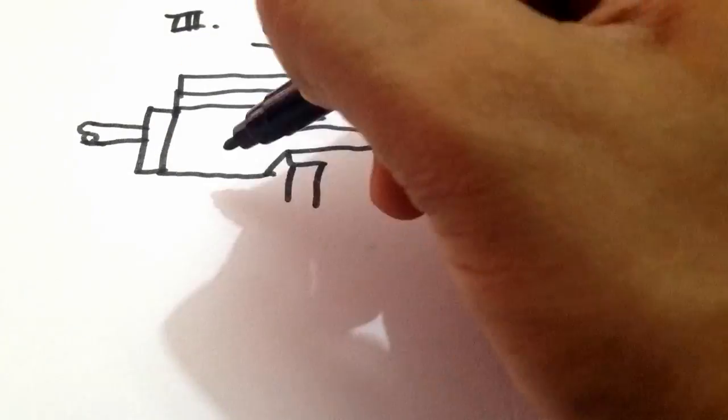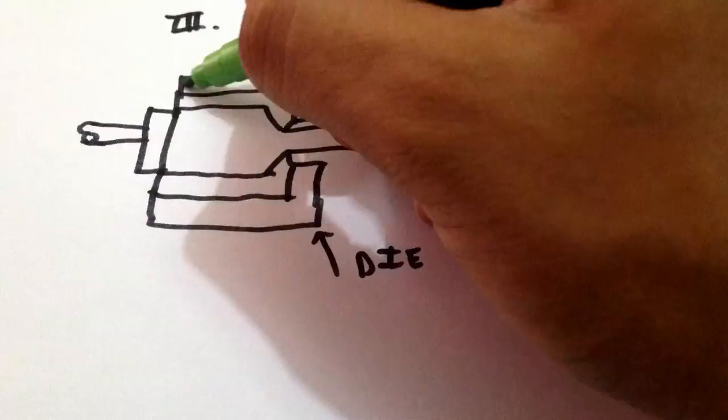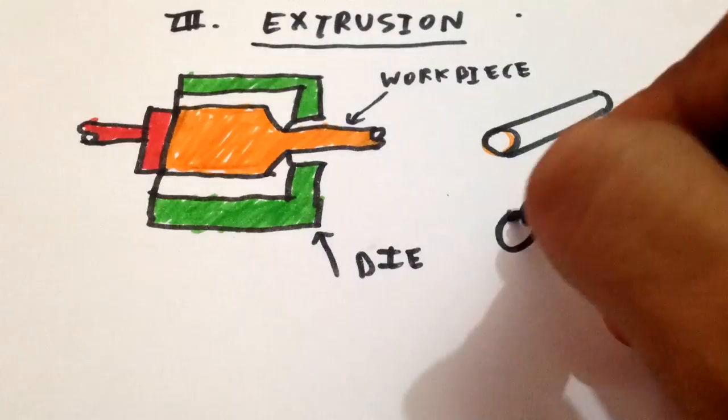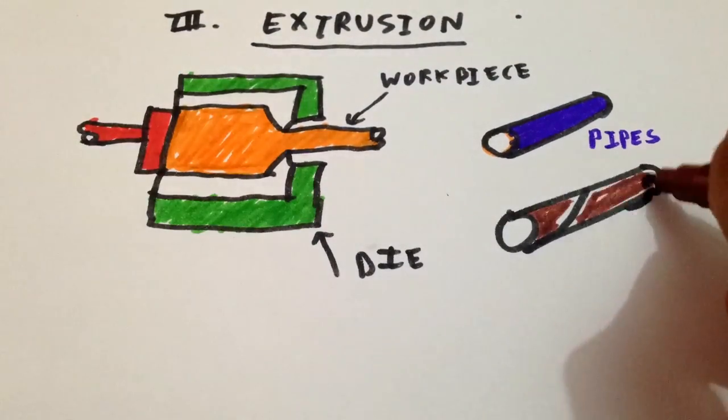Third and the second last type of forming is extrusion which is a compression process in which the work metal is forced to flow through a small opening which is called as a die to produce the required cross-section shape. Many products like tubes, rods etc. are made by using extrusion.